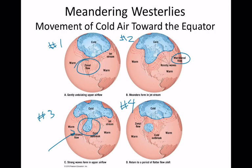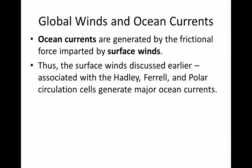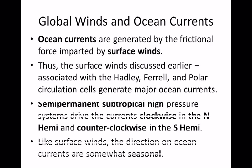In New England they call it the Canadian Express — that cold air coming down. So switching gears back to surface winds: with the Hadley cell we have the easterly trade winds; with the Ferrell cell we have the mid-latitude westerlies; with the Polar cell we have the polar easterlies. Where those cells meet we have semi-permanent highs and semi-permanent lows. This is actually a review slide.